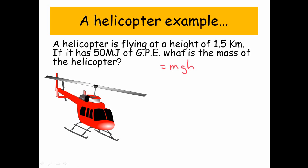So again, we're going to use our formula MGH. Now, we can't use the 1.5 kilometers. We need to convert to meters, so we times by 1,000. So 1.5 kilometers is 1,500 meters.